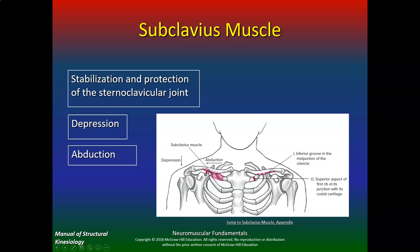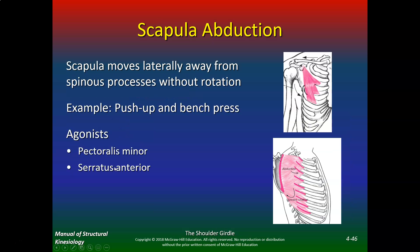The subclavius is an interesting muscle just underneath the clavicle. It provides stabilization and protection of the sternoclavicular joint, and performs depression and abduction. Scapular abduction means the scapula moves laterally away from the spinous process without rotation — think push-ups and bench press. The agonists for scapular abduction are pectoralis major, pec minor, and serratus anterior.